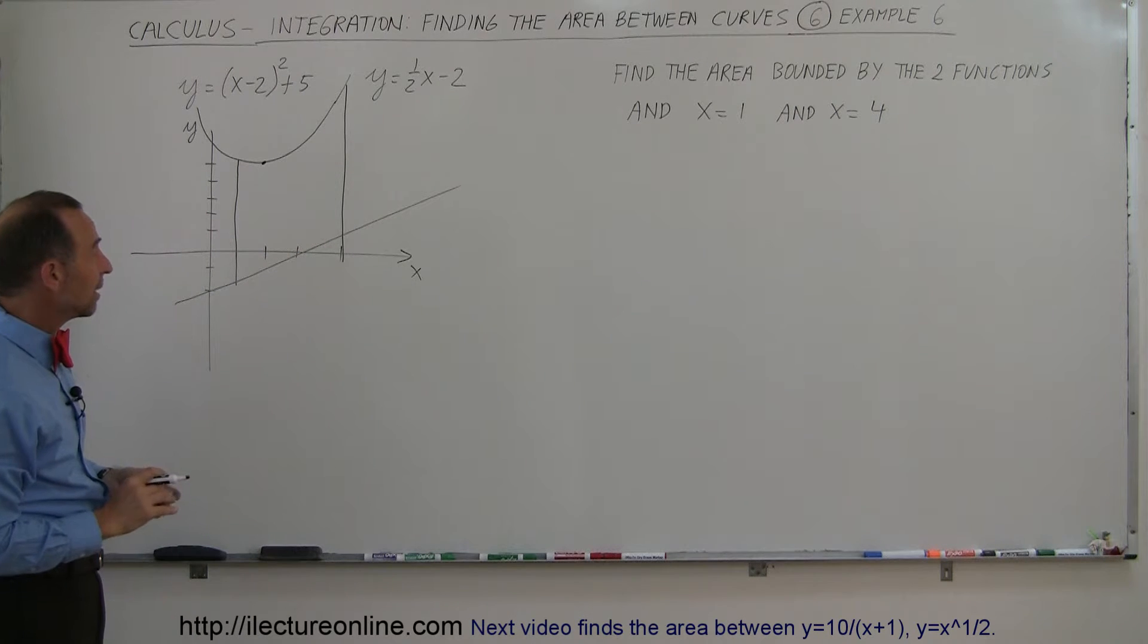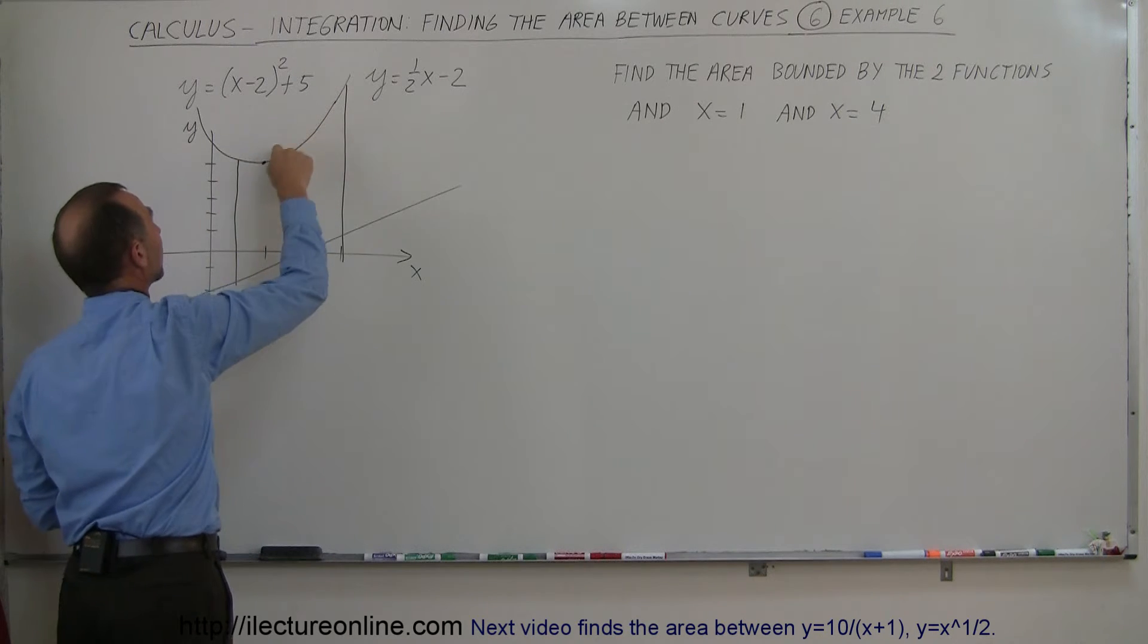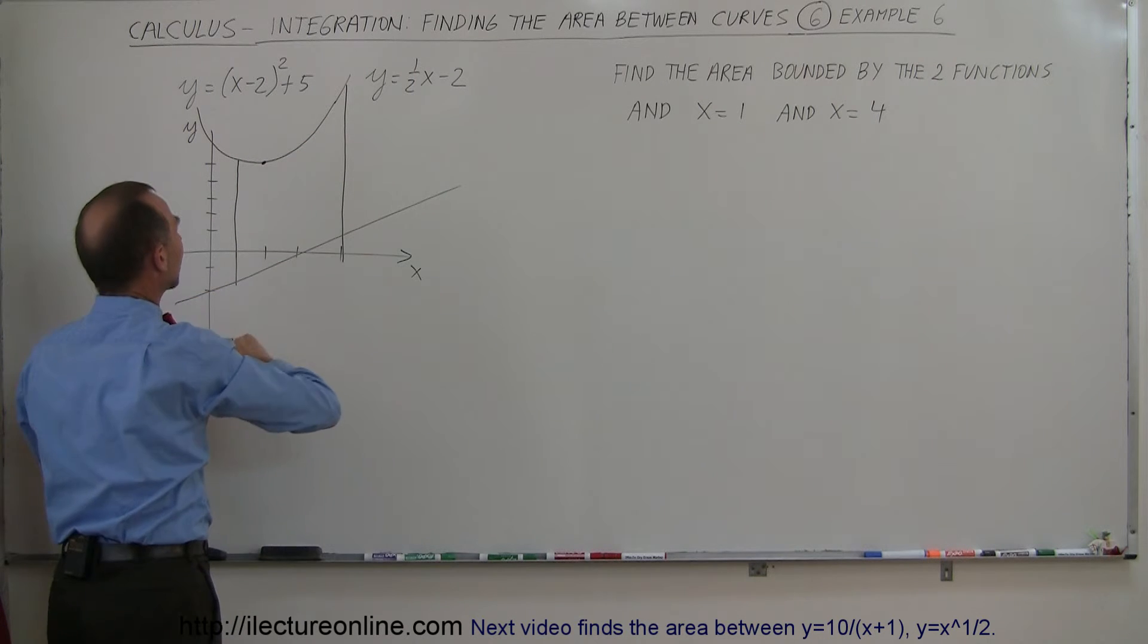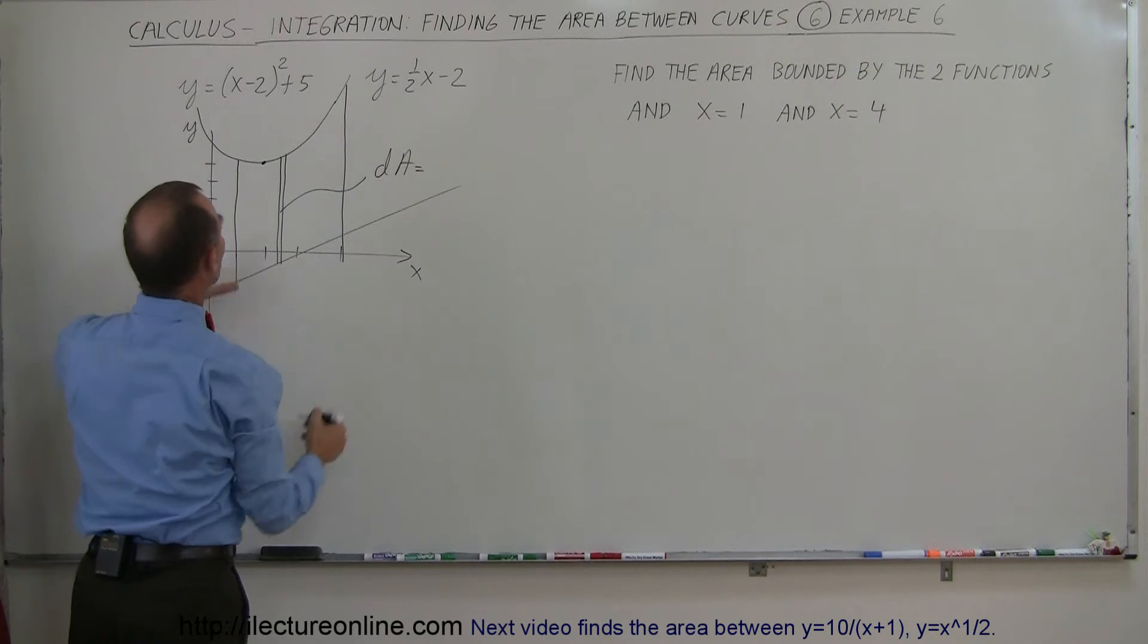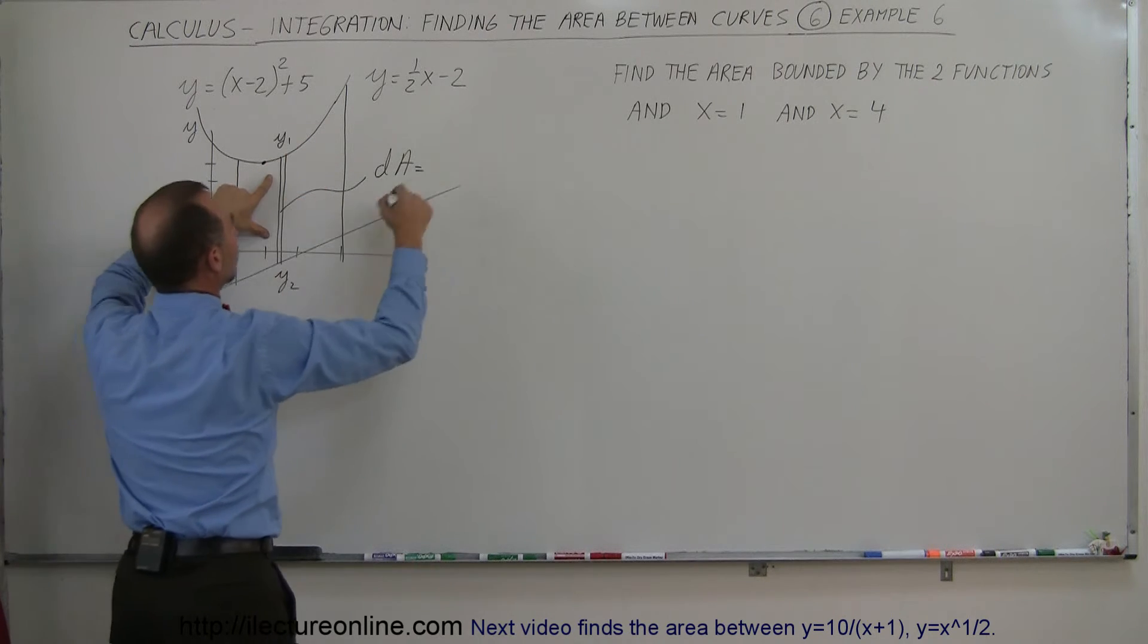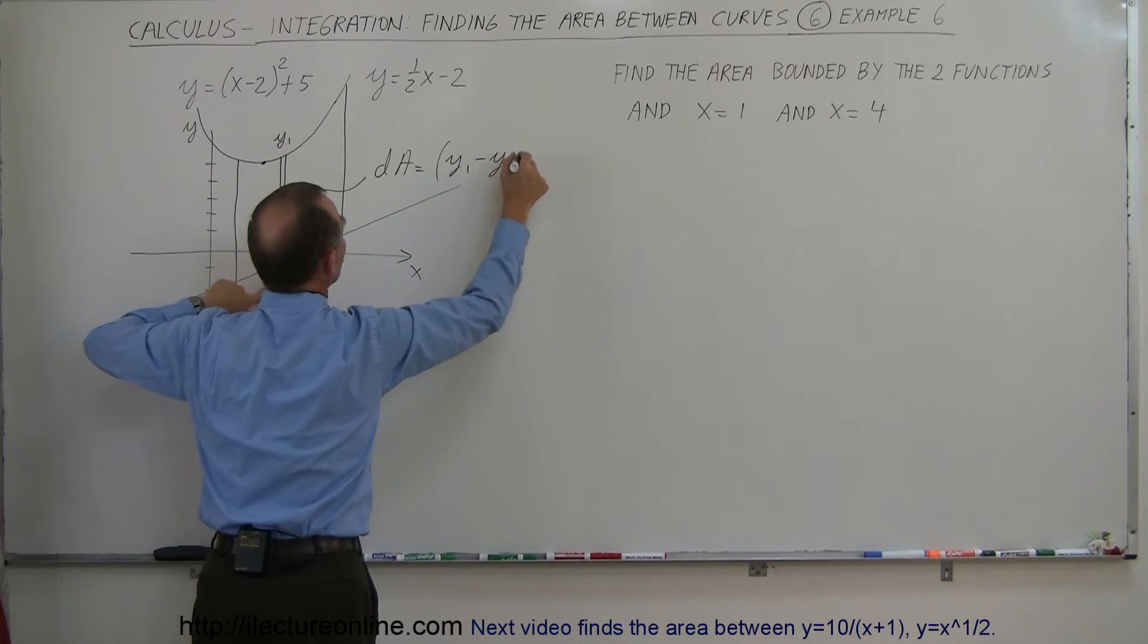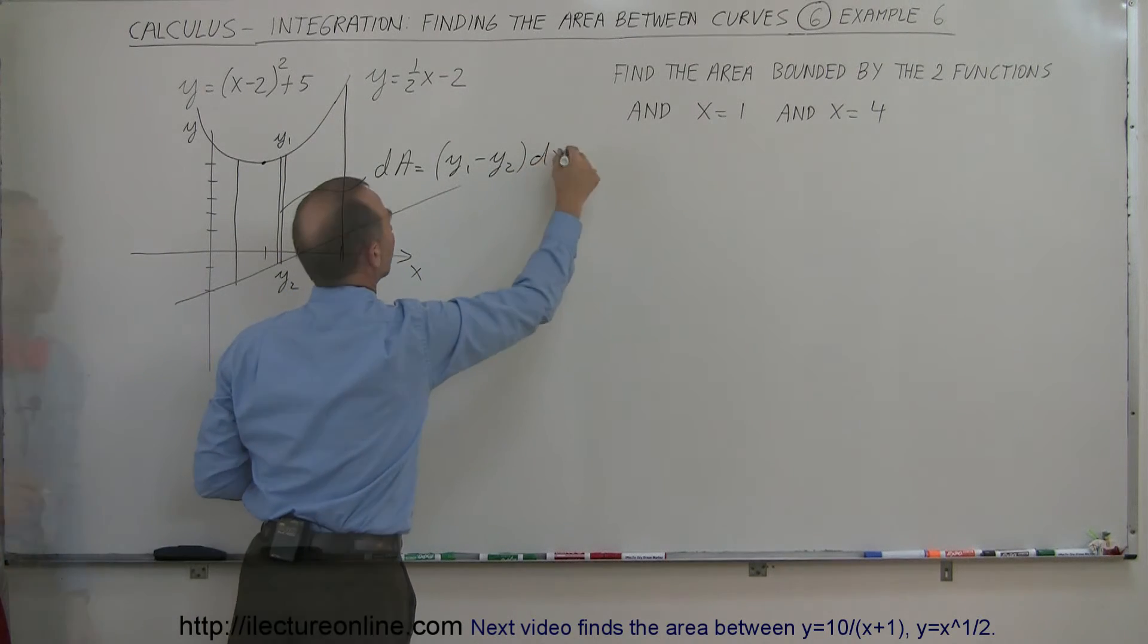The best way is probably to have the area element vertically. That way the top part of the area element will be bounded by this curve and the bottom will be bounded by this line right there. So this would be a good way to set up the area element. So let's call this dA and the dA will be equal to the height.